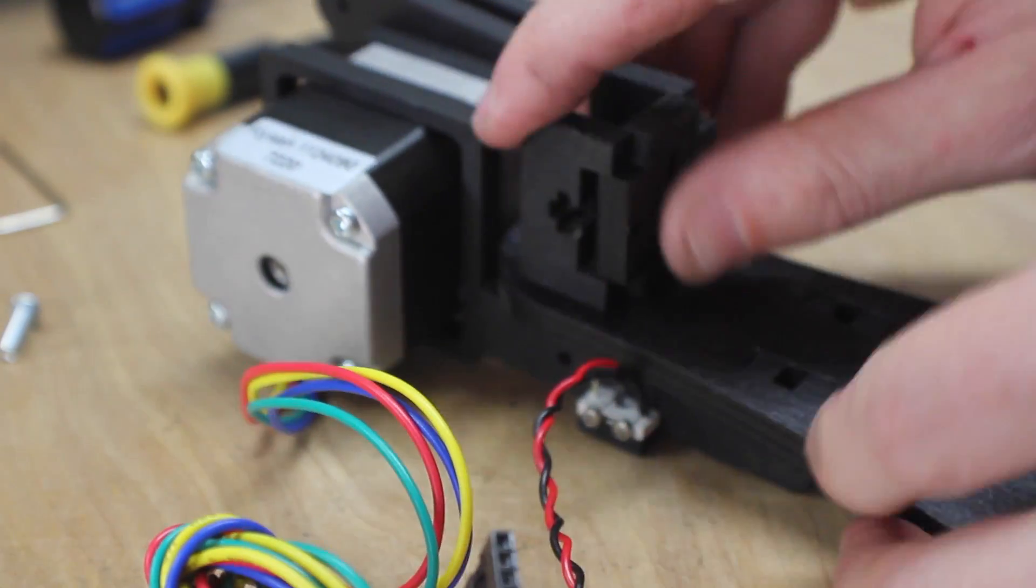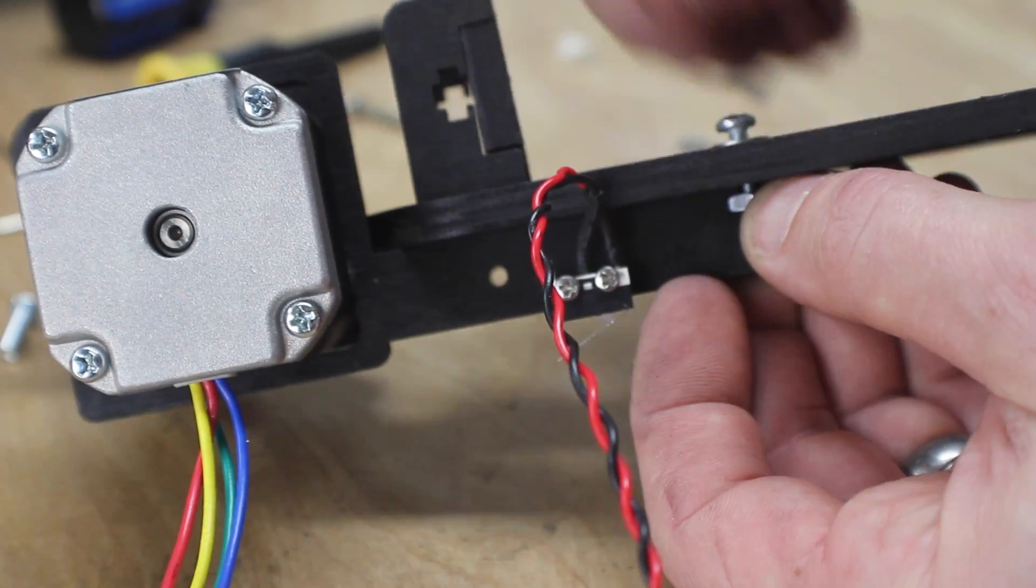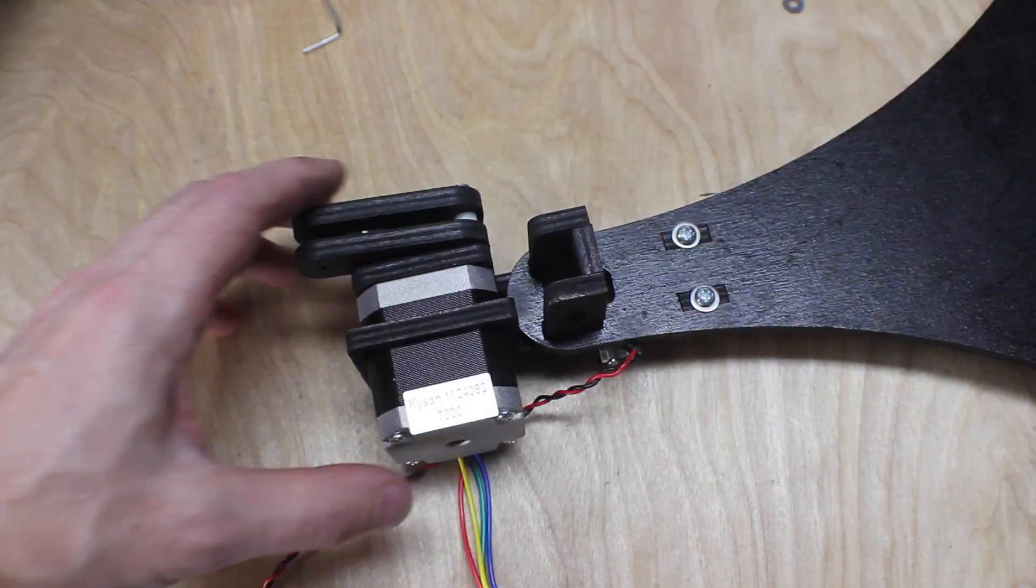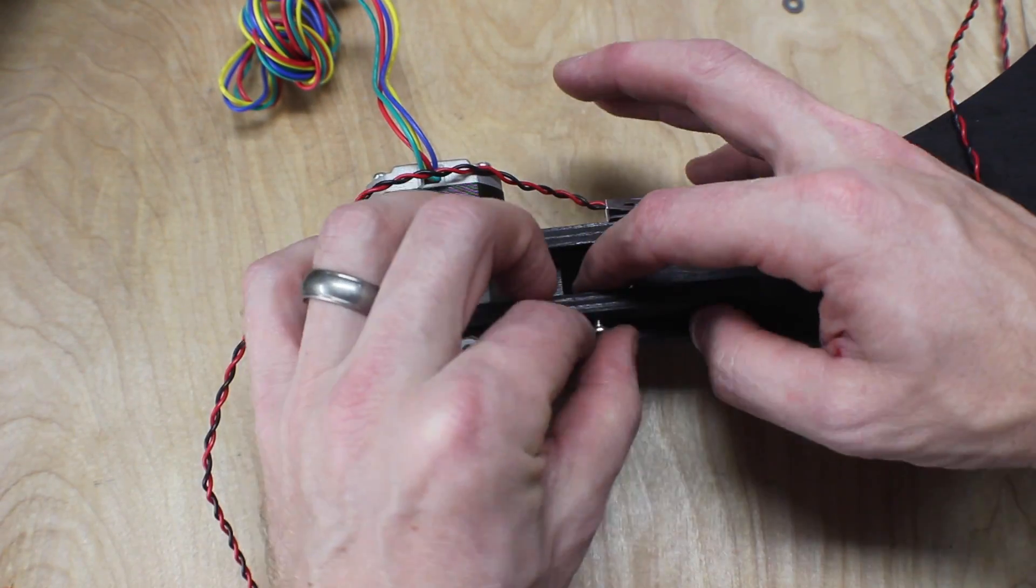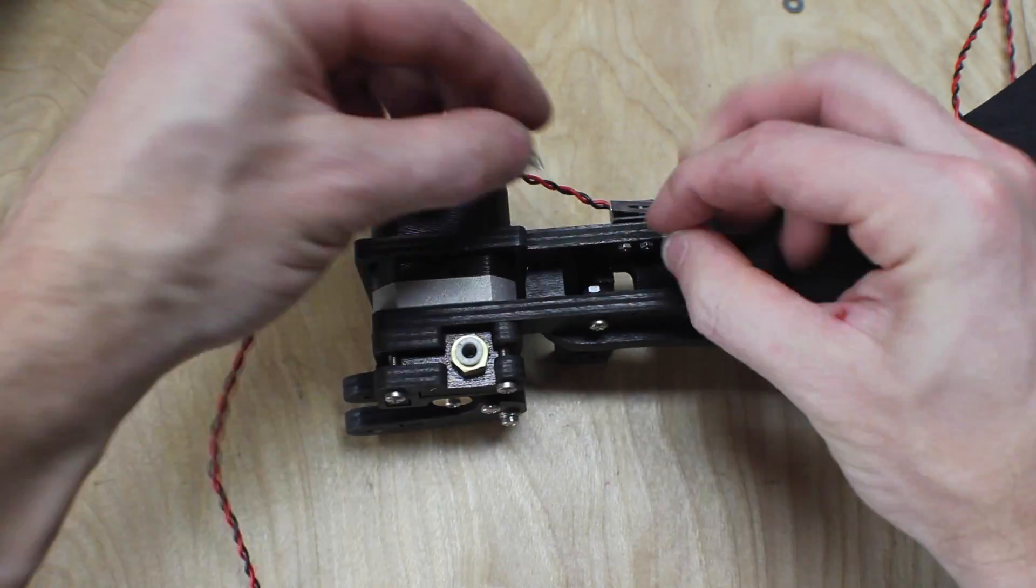Then you add the front panel, add the screws, and the nuts just like before. Then you flip it over and add screws and nuts loosely that will attach it to the extrusion later.